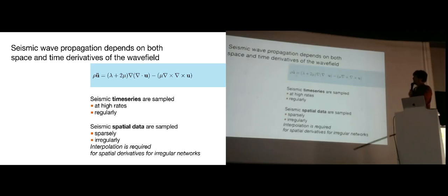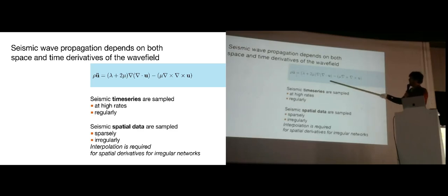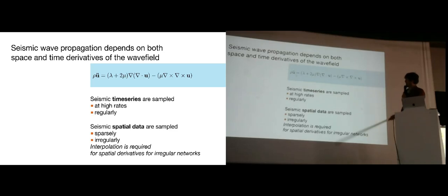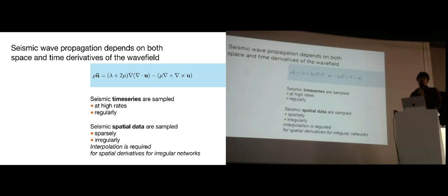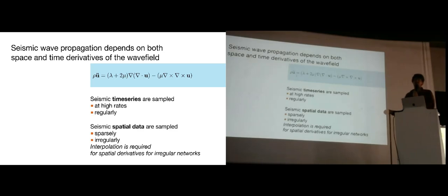When we think about that, we have to recognize that seismic wave-propagation depends fundamentally on both the space and time derivatives of the wave-field. The prototypical homogeneous elastic wave-equation has momentum on the left and forces on the right. We need the second time derivative and the second space derivative to be captured in order to fully characterize what the wave-propagation is doing. Getting the time-series side down well was the great achievement of 20th century seismology.